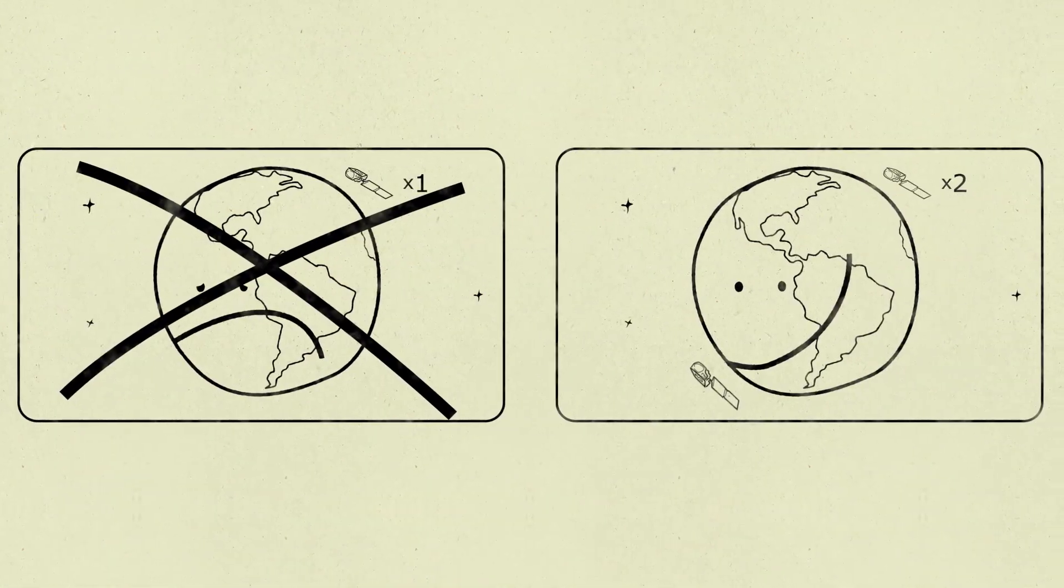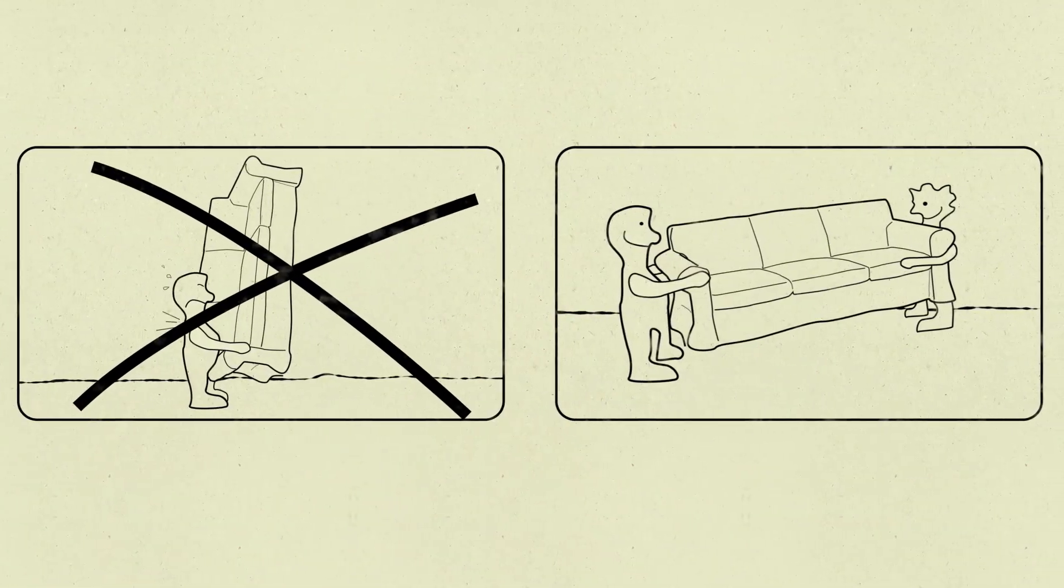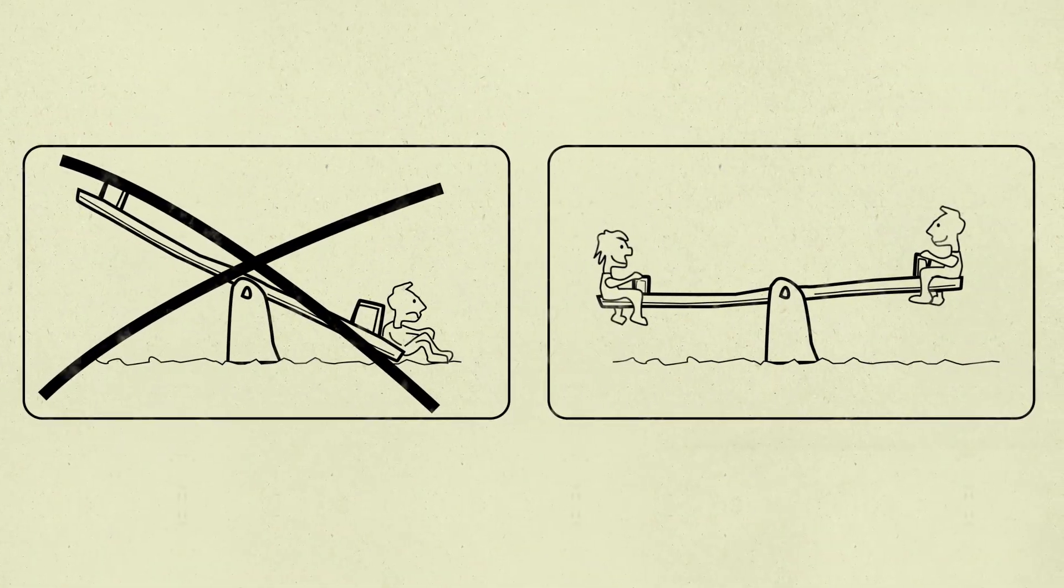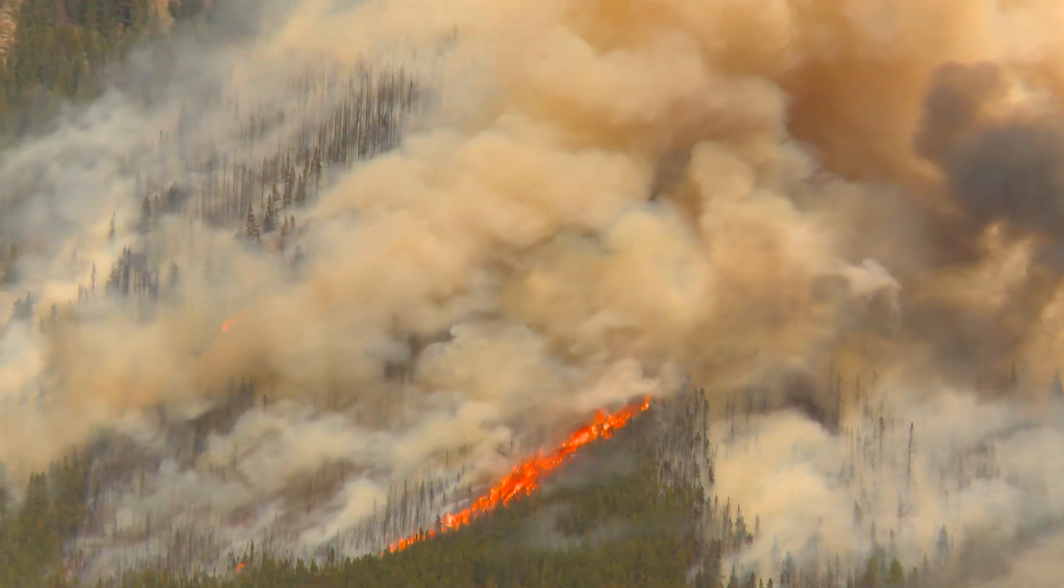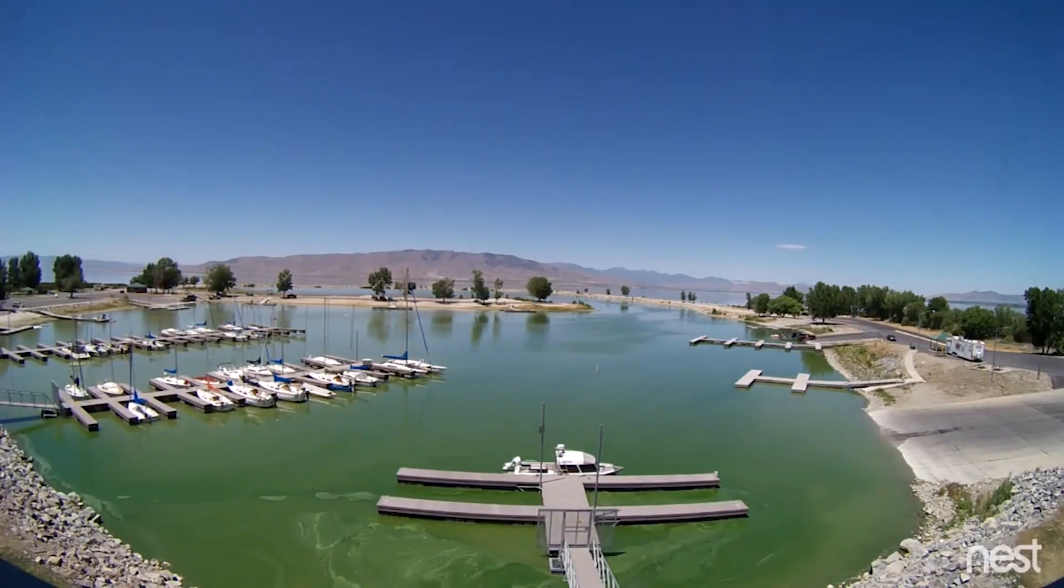In this case, two satellites are better than one. Landsats 8 and 9 can work together to provide near real-time data about what's happening on the surface of our planet.